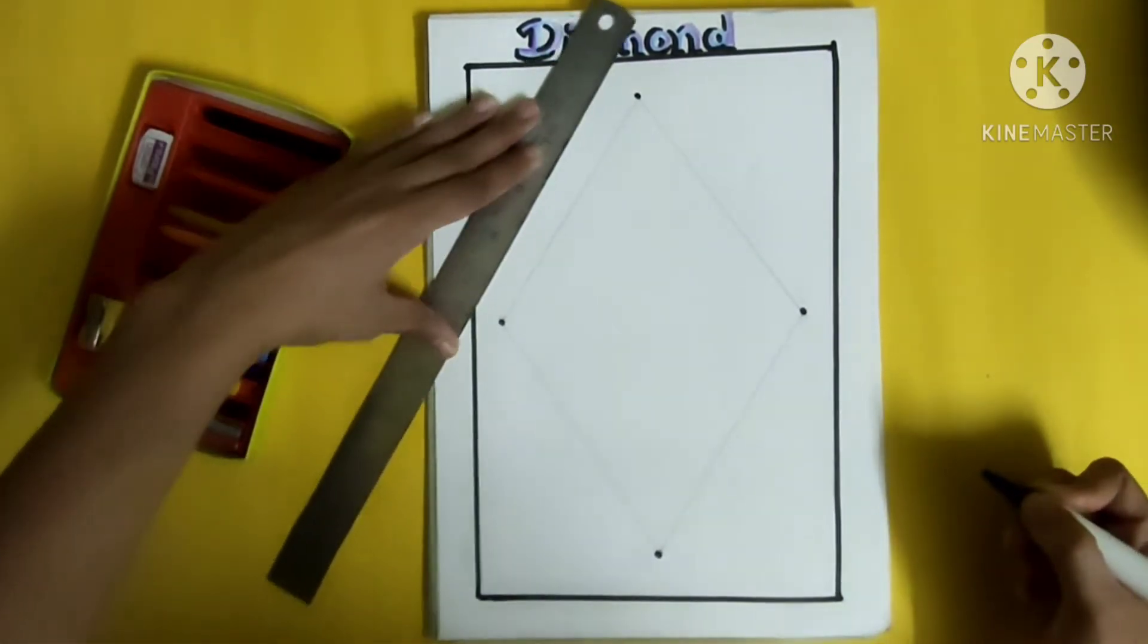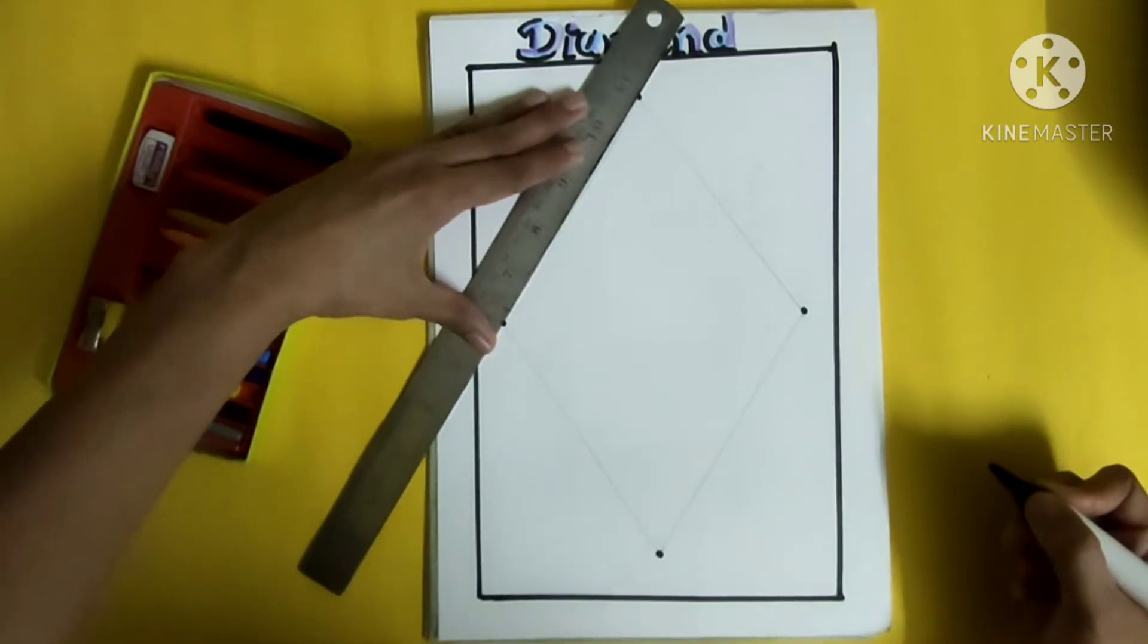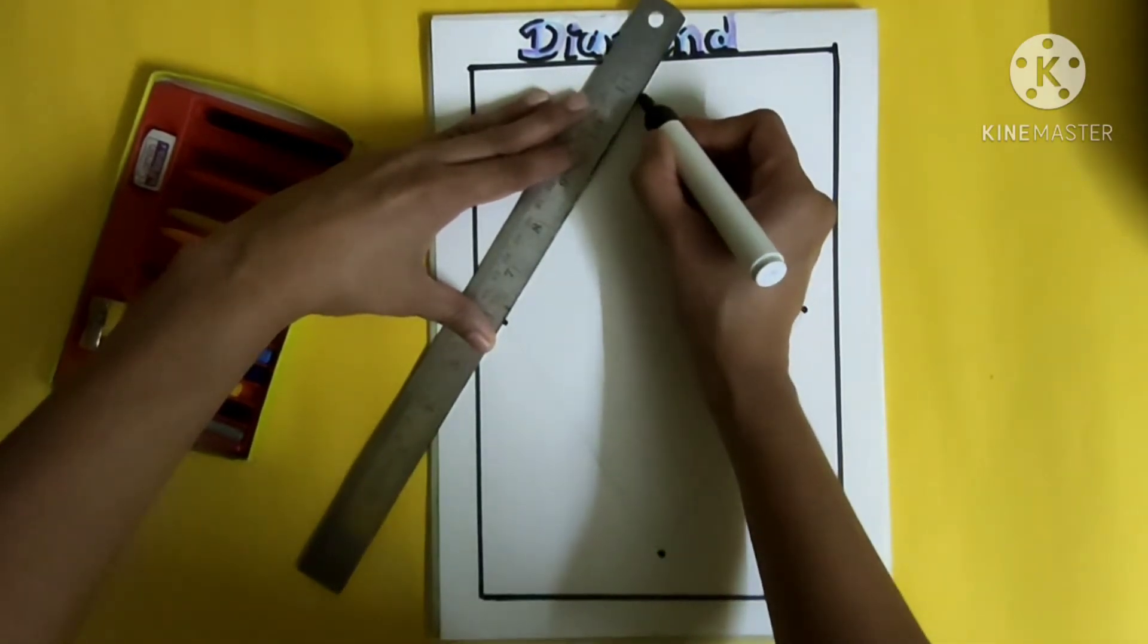Draw like that, four dots, and tell your parents to help you.